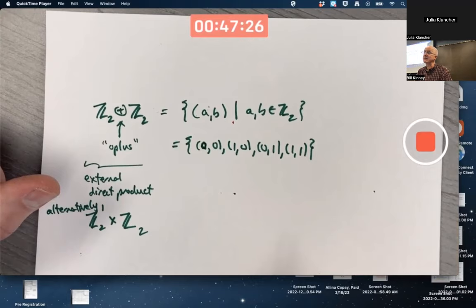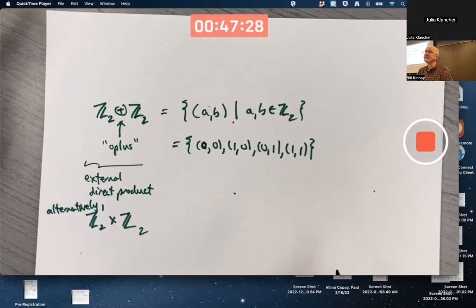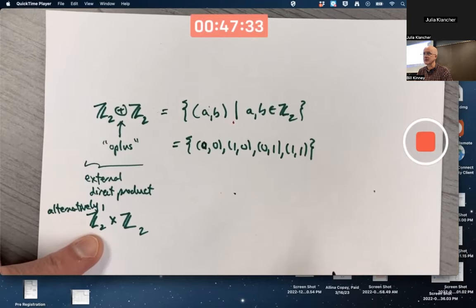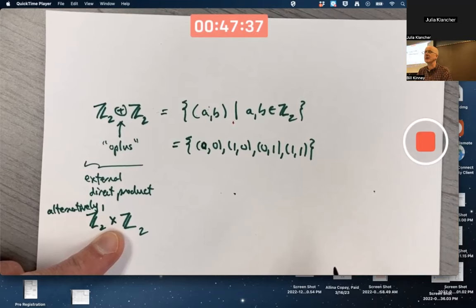That's what it is as a set. It's really the Cartesian product of the two groups as a set, which is why I prefer this notation, because that times is notation for Cartesian product.